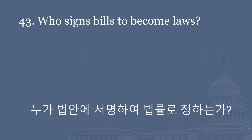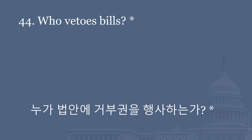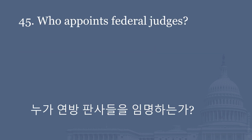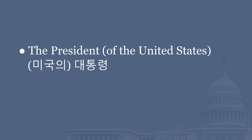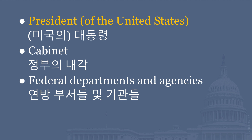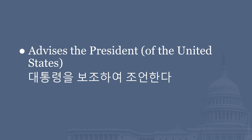Who signs bills to become laws? The President of the United States. Who appoints federal judges? The President of the United States. The Executive Branch has many parts. Name one. President of the United States. Federal departments and agencies. What does the President's Cabinet do? Advises the President of the United States.